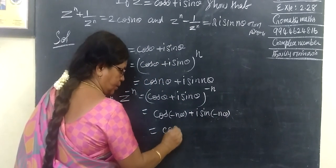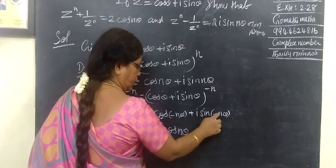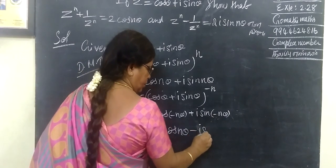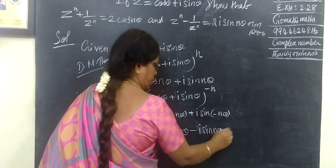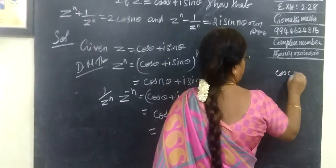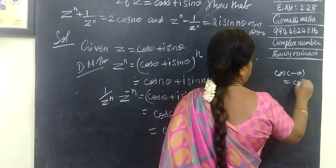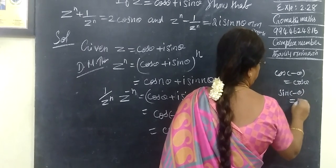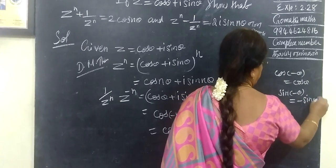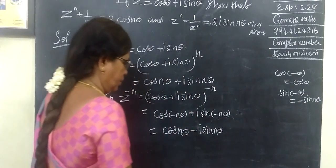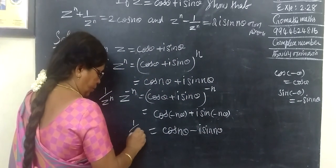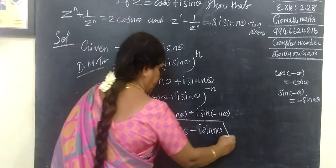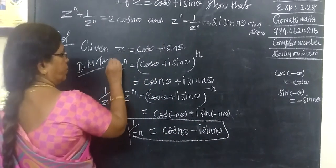We know cos of minus theta equals cos theta, and sin of minus theta equals minus sin theta. So 1 by z power n equals cos n theta minus i sin n theta.